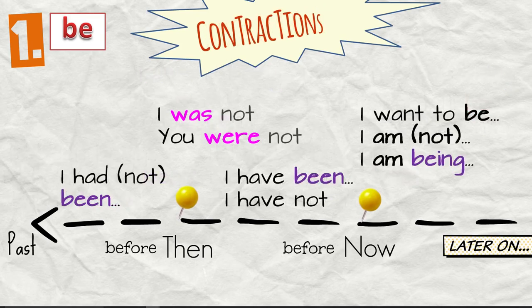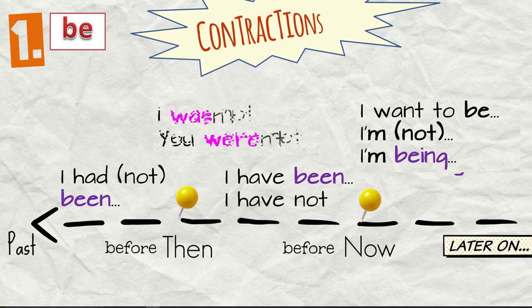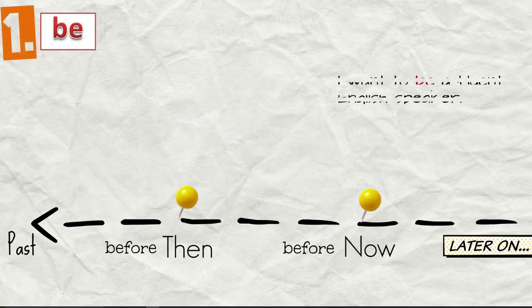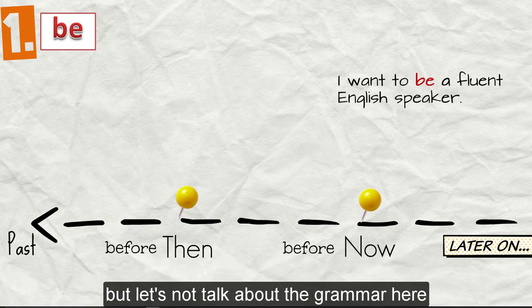Very important are contractions. So I am, it's I'm, or the negative I was not, you were not, it's I wasn't, you weren't, or I have been, I've been, I had been, I'd been. I want to be a fluent English speaker. So the verb to be is the basic form, or we also say infinitive, but let's not talk about the grammar here.